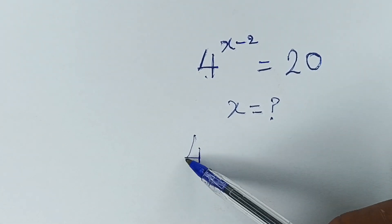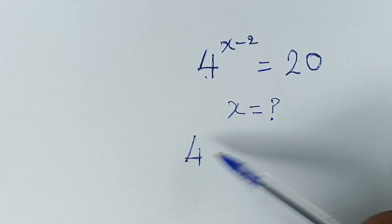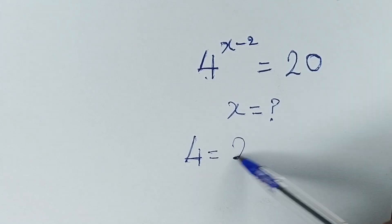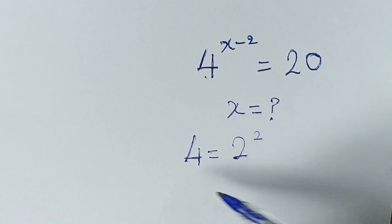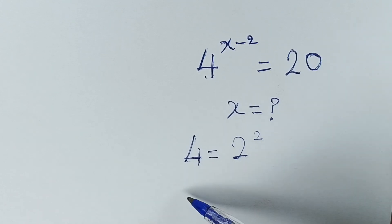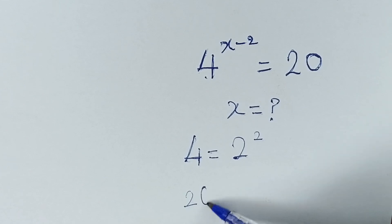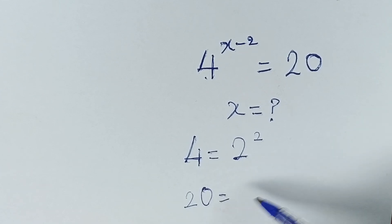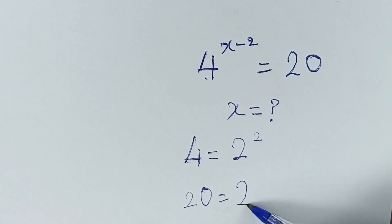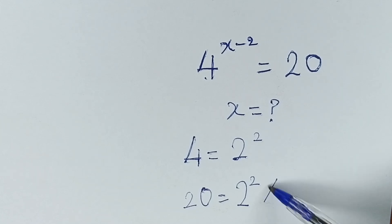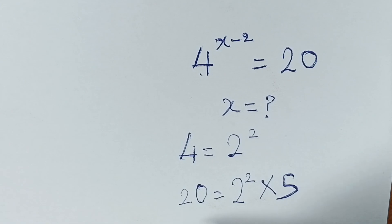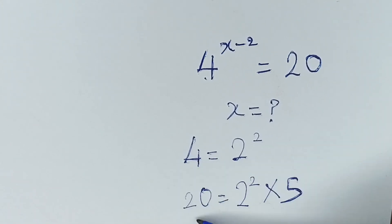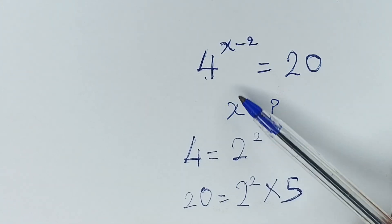The first thing we do is express 4 as 2 raised to power 2, because 2 times 2 is 4. On the other hand, 20 can be written as 2 raised to power 2 times 5, because 4 times 5 is 20. Now we can replace 4 and 20 with these expressions in the equation.